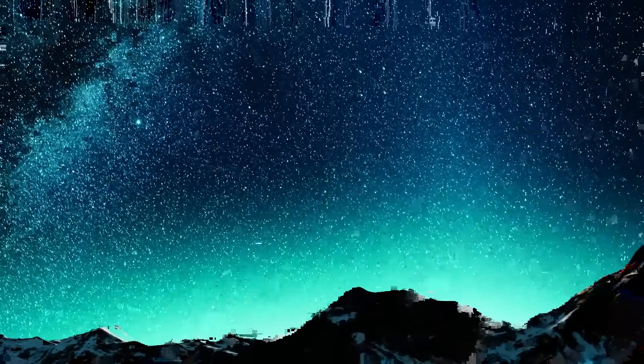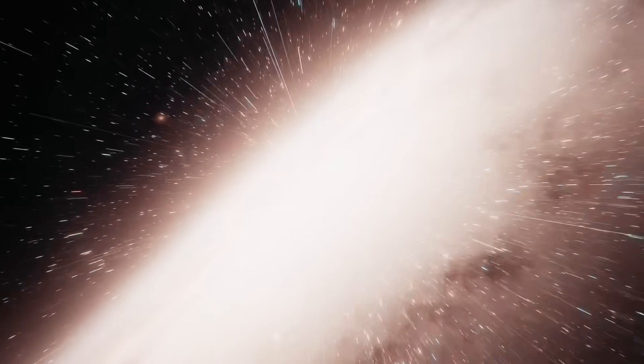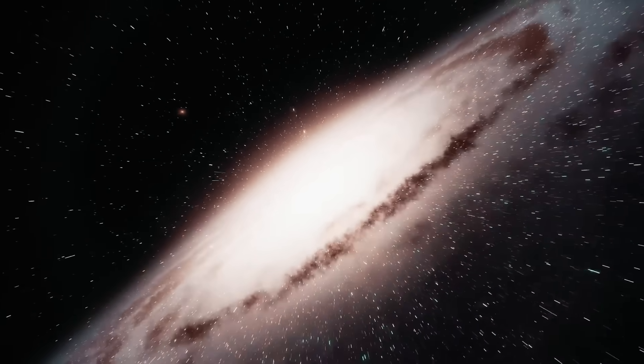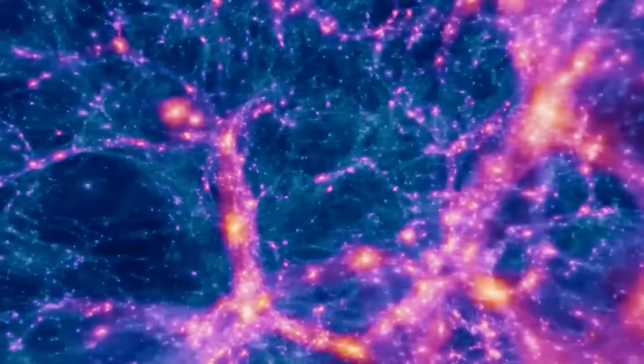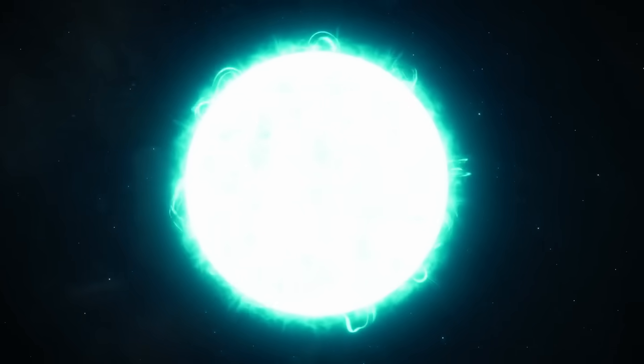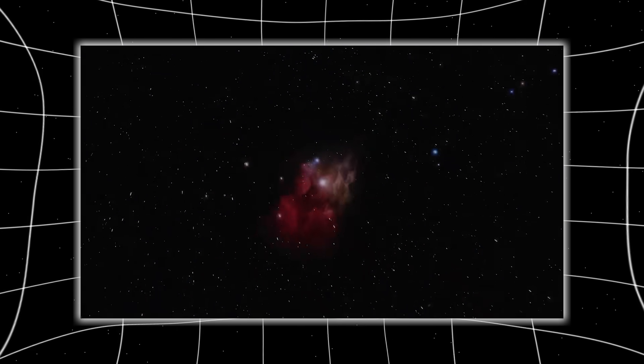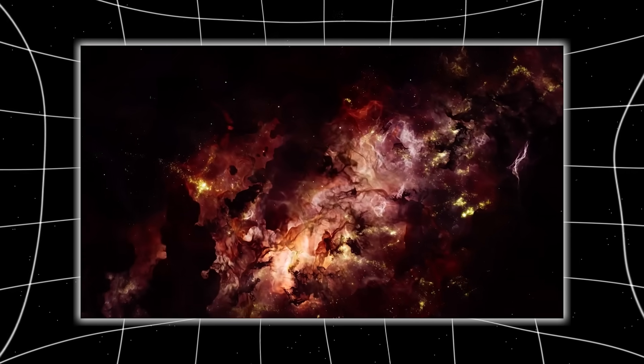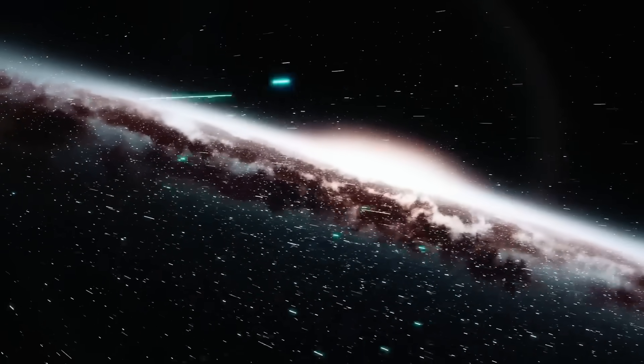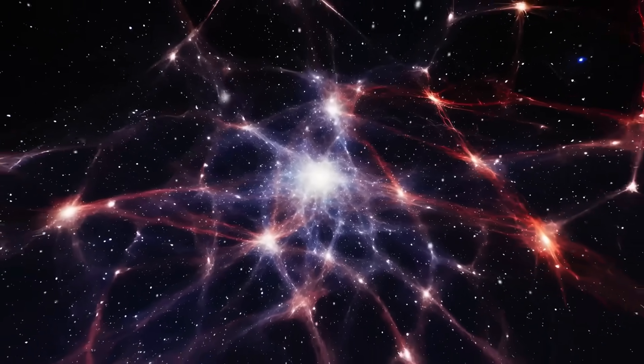As Voyager pushed deeper, its instruments began painting an image no telescope ever could. A three-dimensional structure hidden in the dark. Its magnetometer picked up a sharp misalignment in the galactic magnetic field, twisting violently against the sun's field, like two tectonic plates grinding together. This wasn't random. It was patterned. Structured. The magnetic turbulence Voyager recorded hinted at something more. That the galaxy itself might have a magnetic skeleton, vast filaments of force shaping where matter flows and where it doesn't.